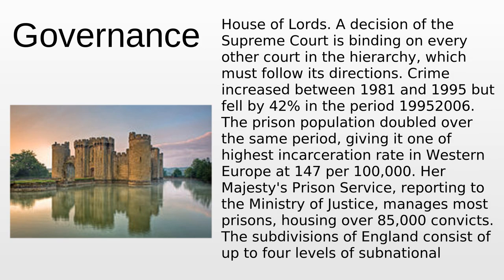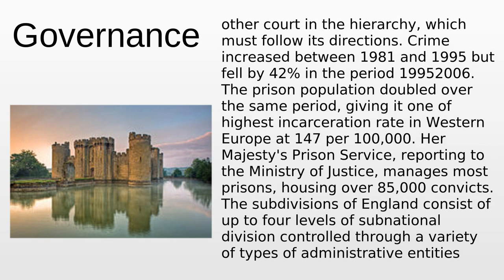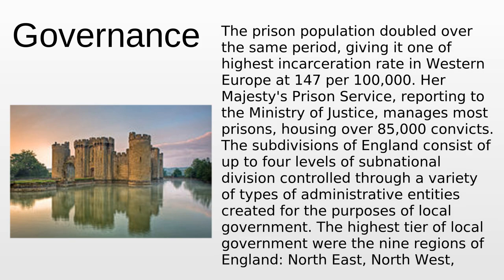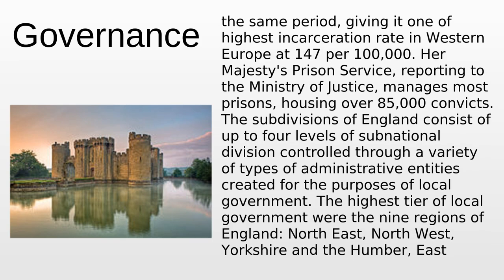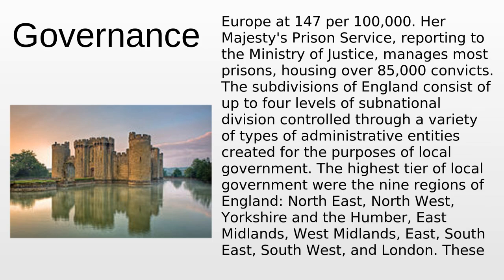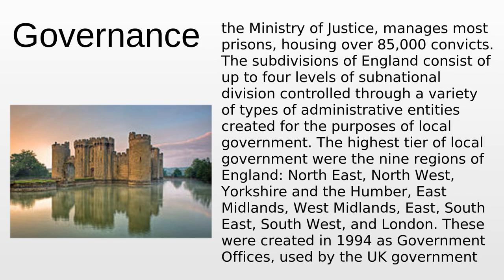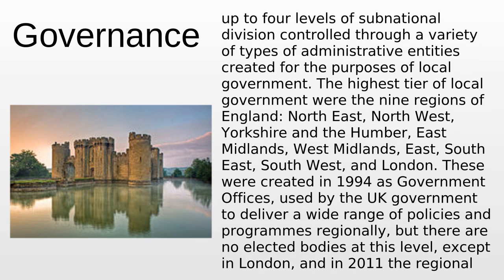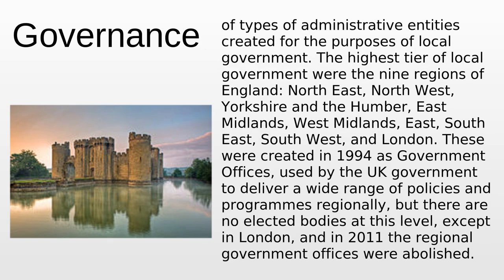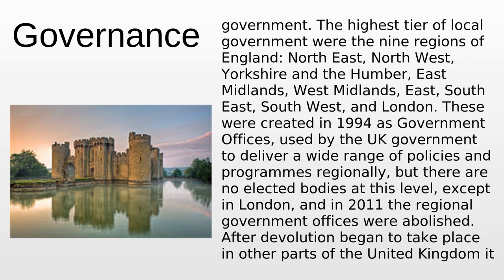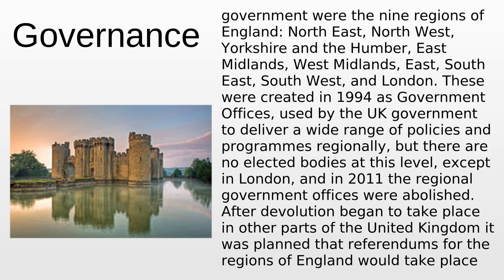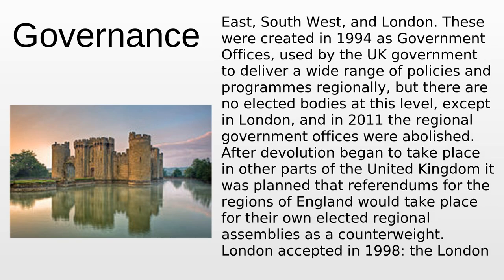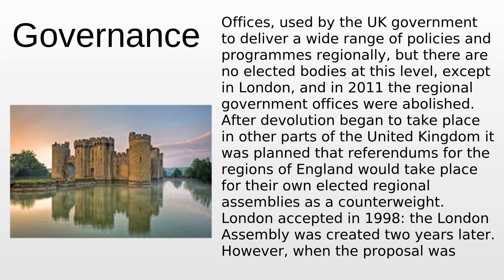Crime increased between 1981 and 1995 but fell by 42% in the period 1995-2006. The prison population doubled over the same period, giving England one of the highest incarceration rates in Western Europe at 147 per 100,000. Her Majesty's Prison Service manages most prisons, housing over 85,000 convicts. The subdivisions of England consist of up to four levels of sub-national division. The highest tier of local government were the nine regions of England: North-east, North-west, Yorkshire and the Humber, East Midlands, West Midlands, East, South-east, South-west, and London. These were created in 1994 but in 2011 the regional government offices were abolished.